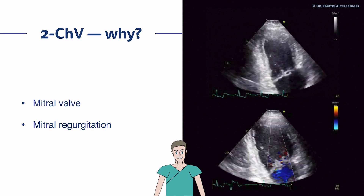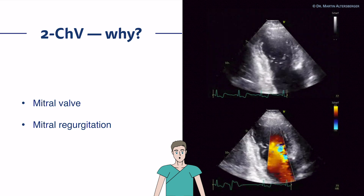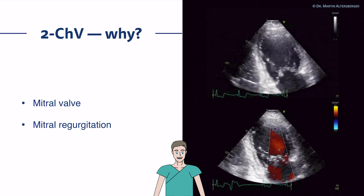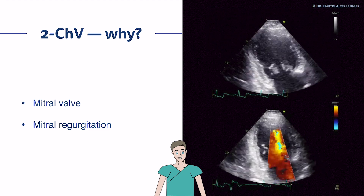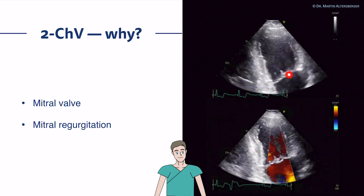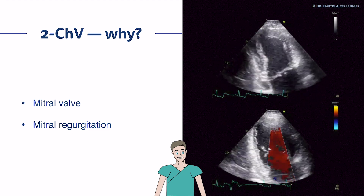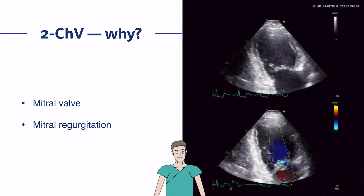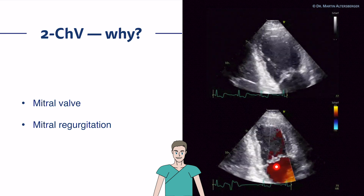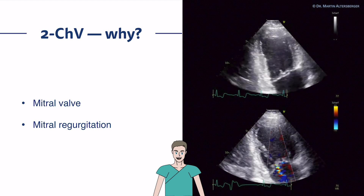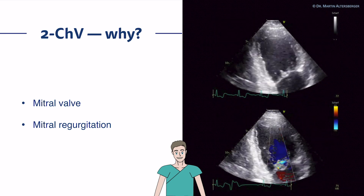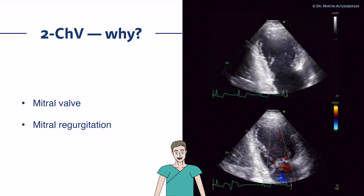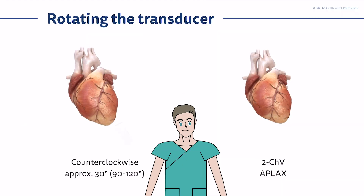Why the two-chamber view for the valve? It's about the mitral valve — mitral regurgitation, mitral stenosis. Here in this case, you see nicely a flail leaflet. Here you see it as well: the truly broad jet origin in this patient with a flail leaflet, which part of the mitral valve we will discuss shortly.